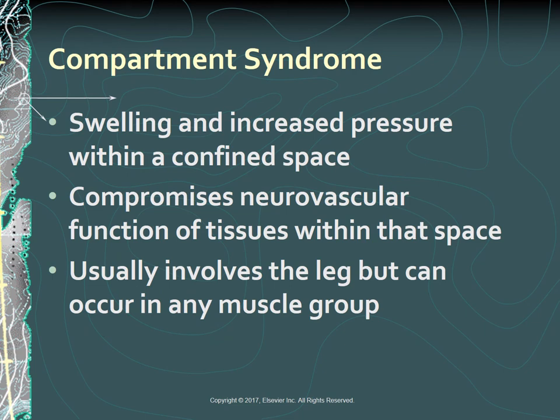Compartment syndrome is a condition in which swelling causes increased pressure within a limited space—the muscle compartment. Because the fascia surrounding the muscle has limited ability to stretch, continued swelling can cause pressure that compromises the function of blood vessels, nerves, and tendons in the compartment. Capillary perfusion is reduced below a level needed for tissue viability. Compartment syndrome usually involves the leg but can also occur in any muscle group, the arm, shoulder, buttock, or abdomen.